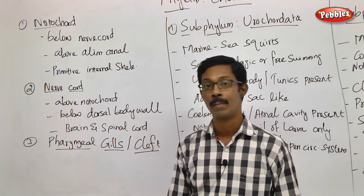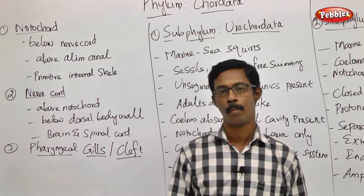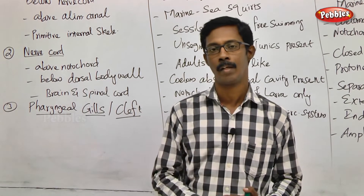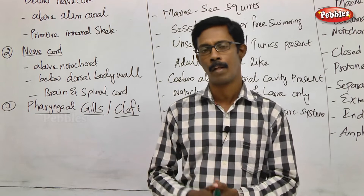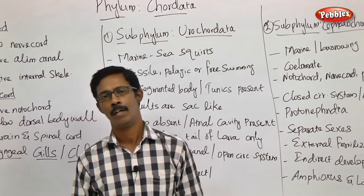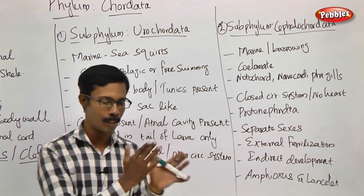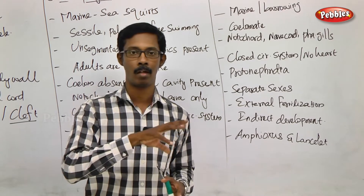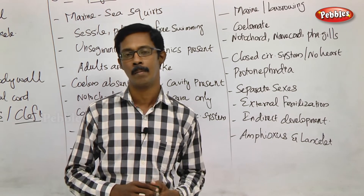So when we have these three characters, we can place an animal in chordata. In the phylum chordata, we will identify sub-phyla. We will get through individual classes and group orders. The sub-phyla of chordata include Urochordata, Cephalochordata, and Vertebrata. When we refer to vertebrates, that is one sub-phylum of phylum chordata.